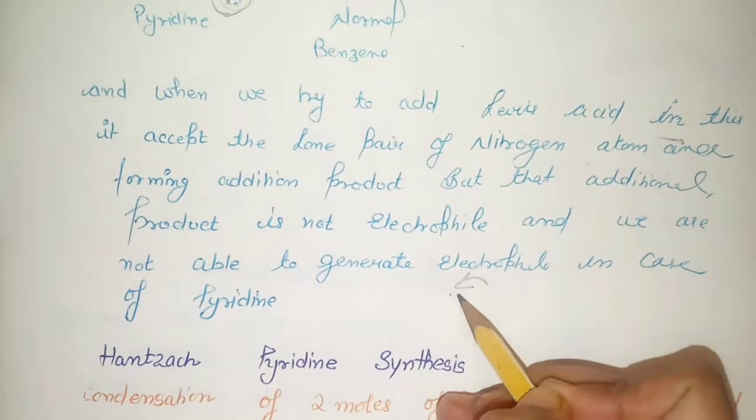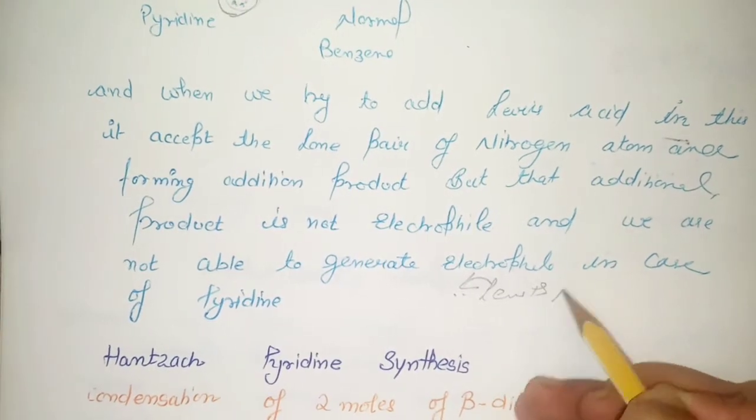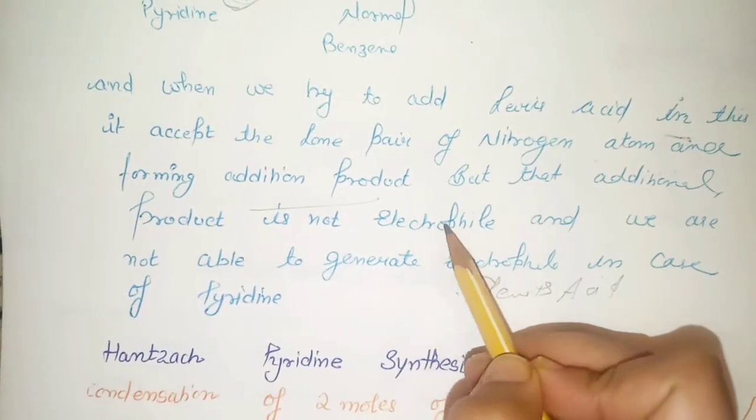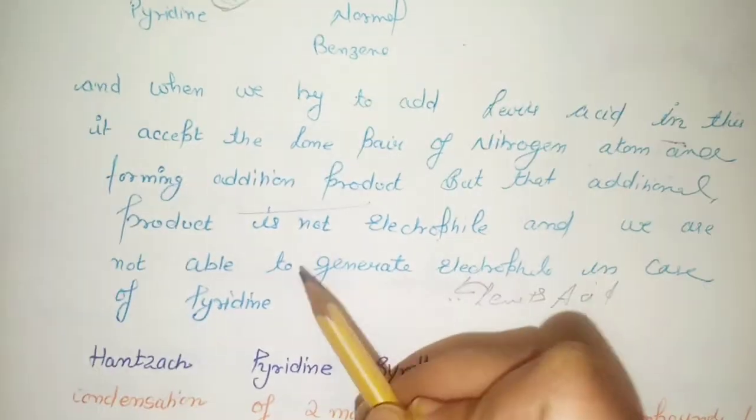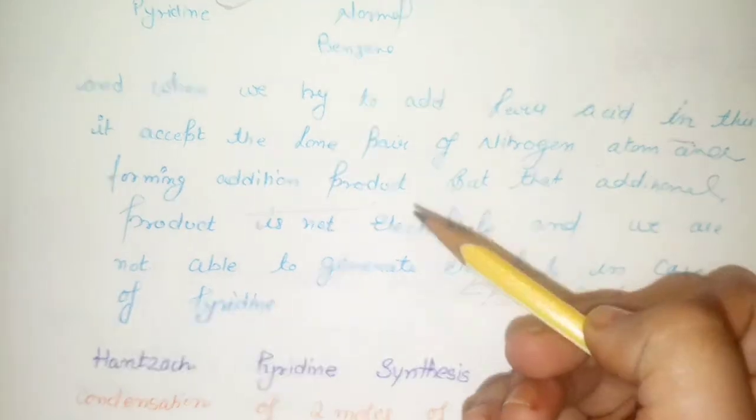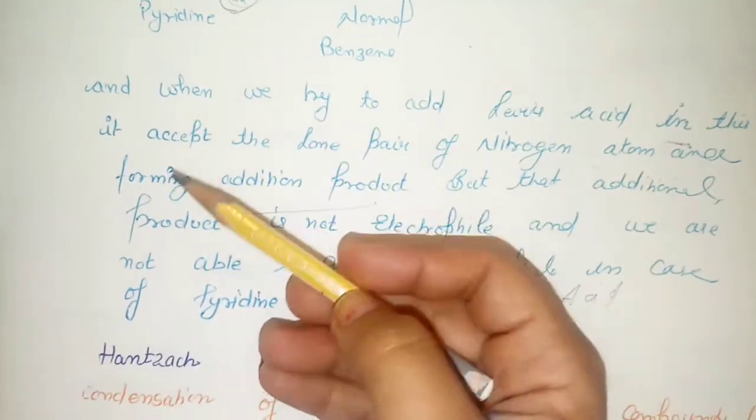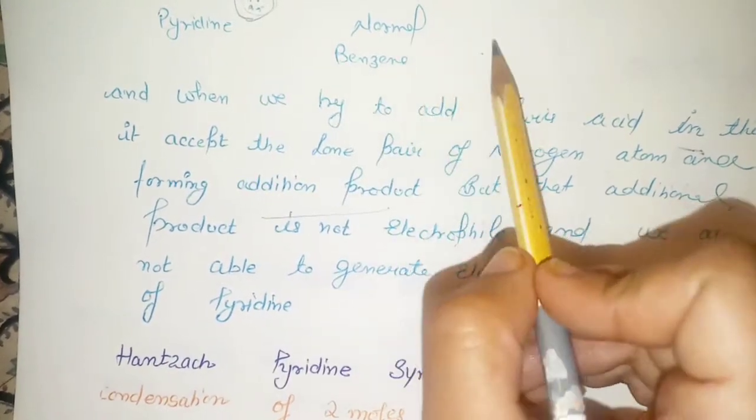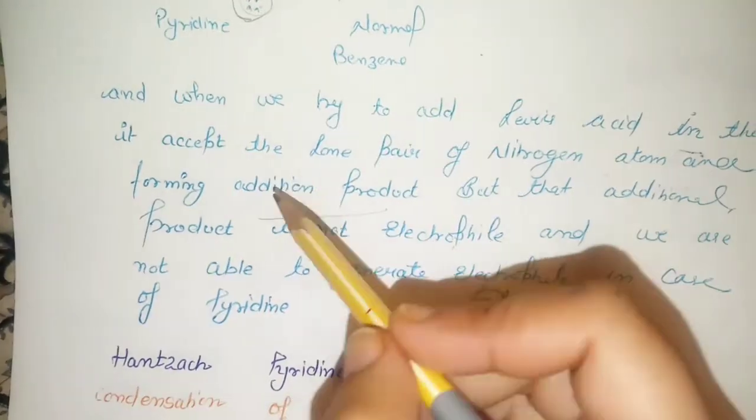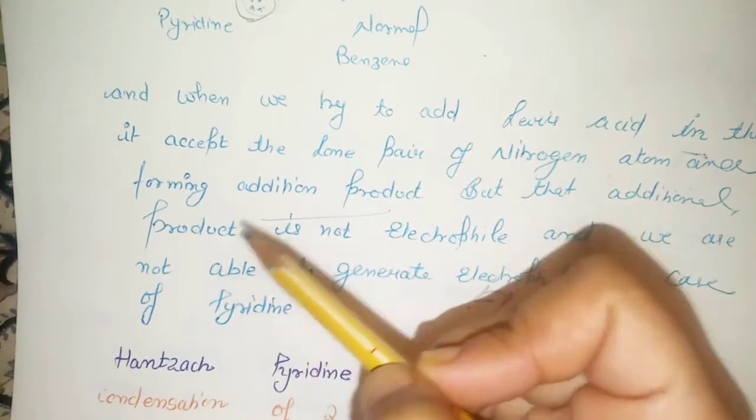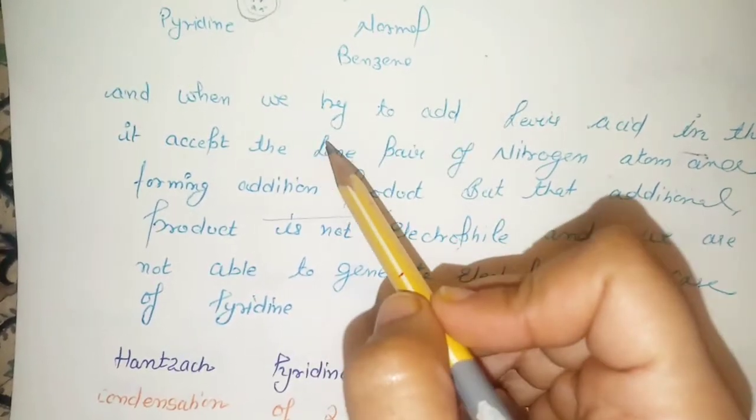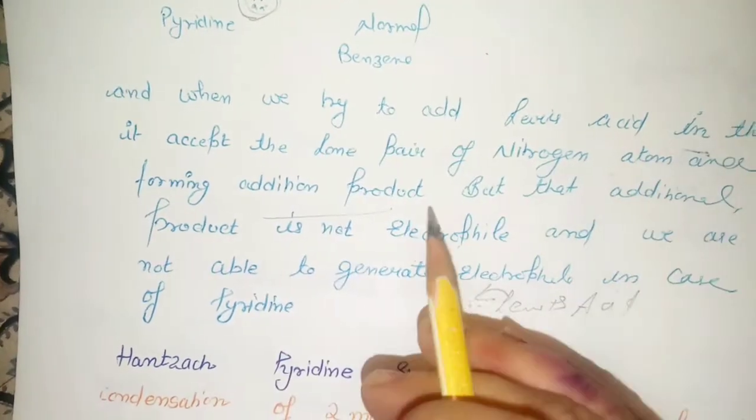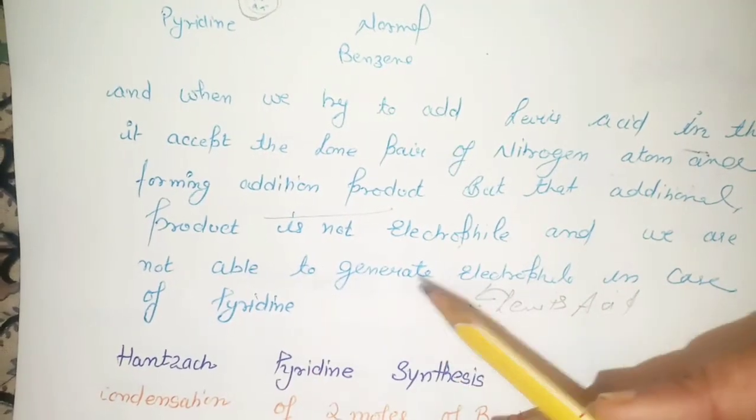Let's talk about Lewis acid. When Lewis acid attacks, first of all it has patched up and made an additional product. We didn't want an additional product. But the additional product doesn't react with the electrophile. When it doesn't react with the electrophile, the additional product is not according to our requirement.